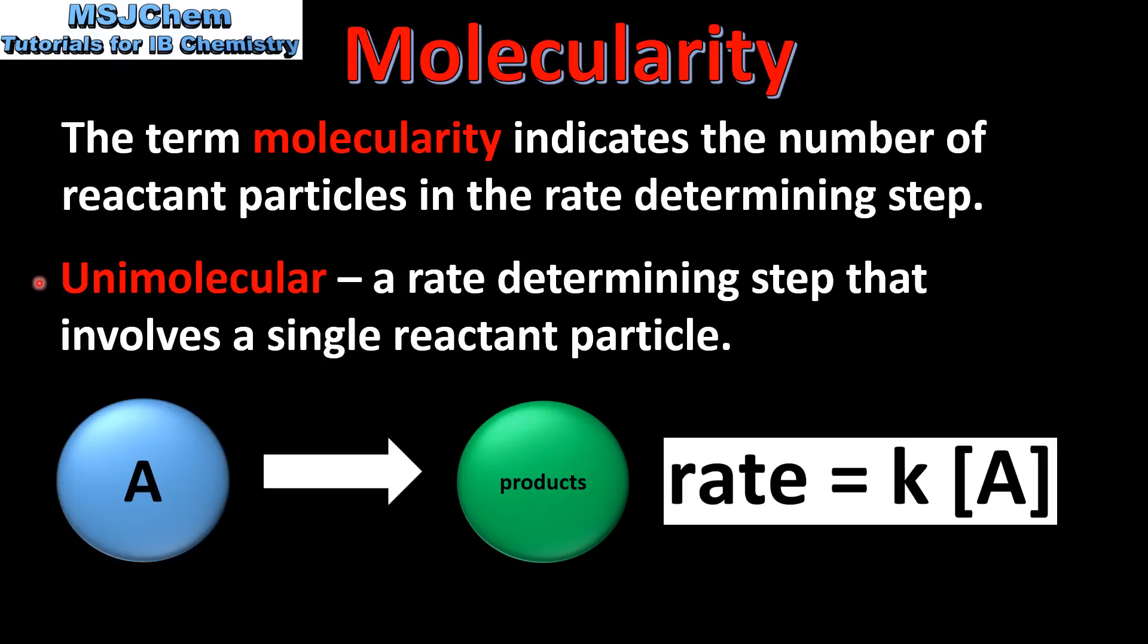So we'll start with unimolecular. This is a rate determining step that involves a single reactant particle. Here we have our single reactant particle A breaking down to form one or more products, and here we have a possible rate expression for a unimolecular reaction.